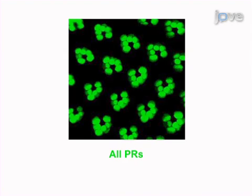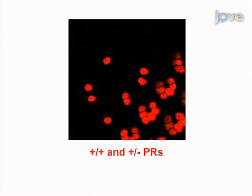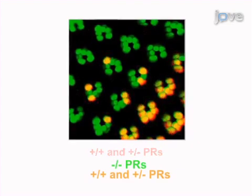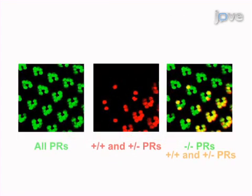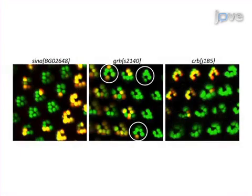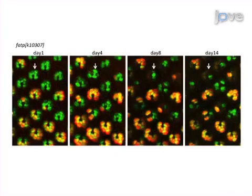All photoreceptors express the green fluorescent protein GFP. The wild-type and heterozygous photoreceptors express the red fluorescent protein Tomato. On the merge image, homozygous mutant receptors are green, whereas wild-type and heterozygous photoreceptors are yellow.